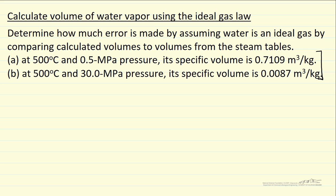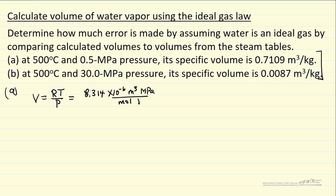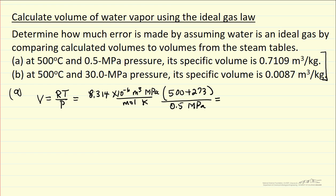Let's apply the ideal gas law. We're going to calculate volume per mole first, so RT over P. The ideal gas constant is 8.314 times 10 to the minus 6, with units of cubic meters megapascals per mole per Kelvin. The temperature is 500 plus 273 to convert to Kelvin, and the pressure is 0.5 megapascals. Doing this calculation, I get 0.0129 cubic meters per mole.